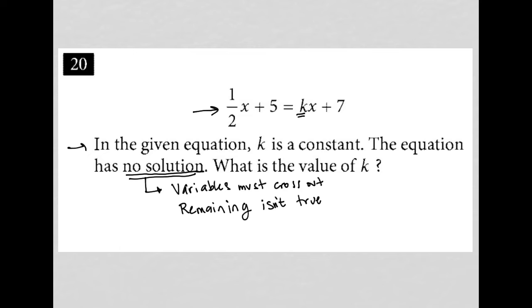So let's see, the only variables we have here are x. So we only have a single variable that's x. If I wanted to combine my like terms here, combine x terms, let's say I had 1 half x plus 5 equals kx plus 7.